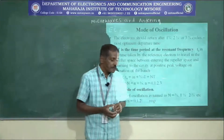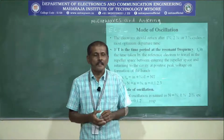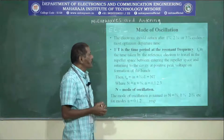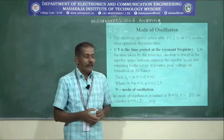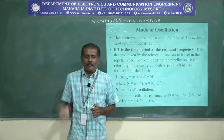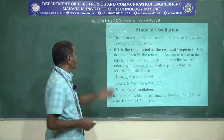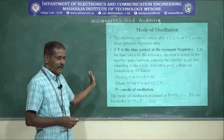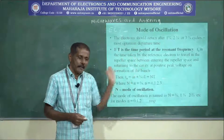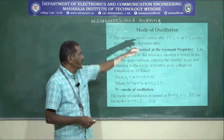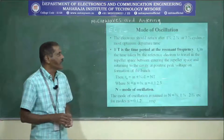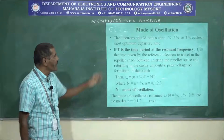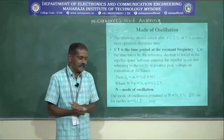This particular reflex klystron is basically used for the generation of oscillations. It operates in different modes, and in the different modes it produces different oscillations. The electrons will move and they will repel back from the repeller. So the electrons will return after one three-fourth, two three-fourth, and three three-fourth of the time cycles for most optimum departure times.